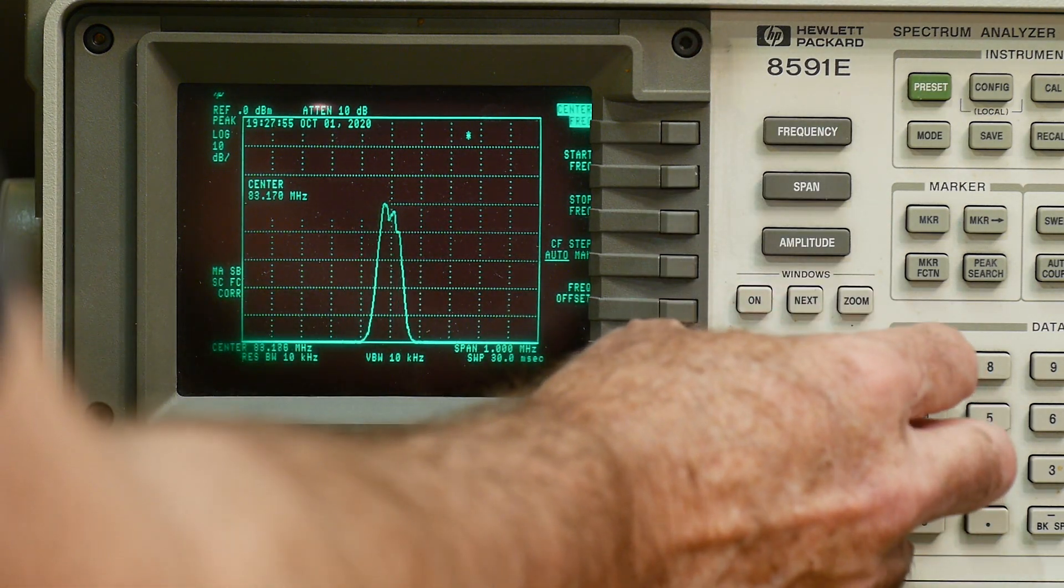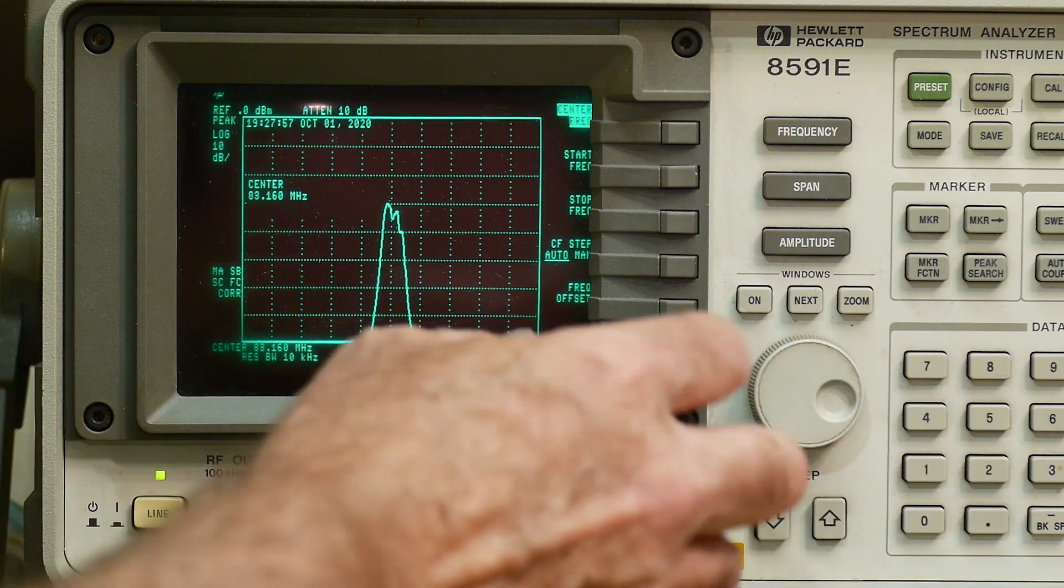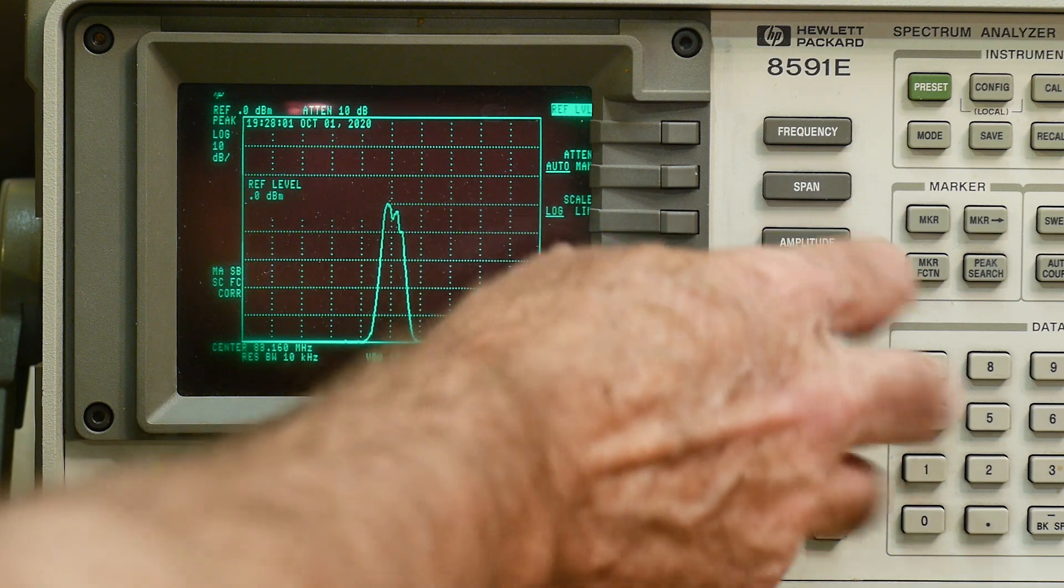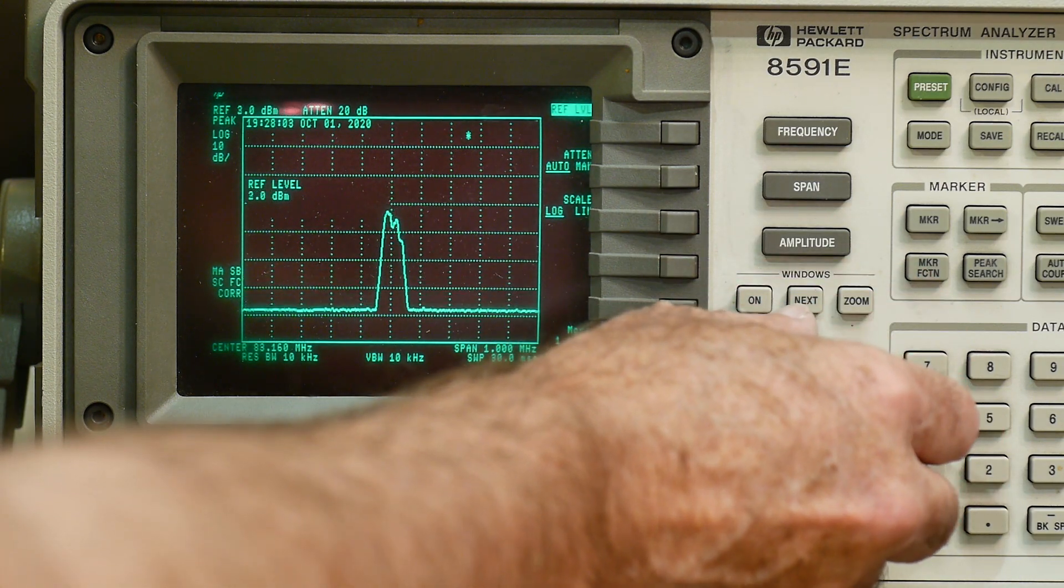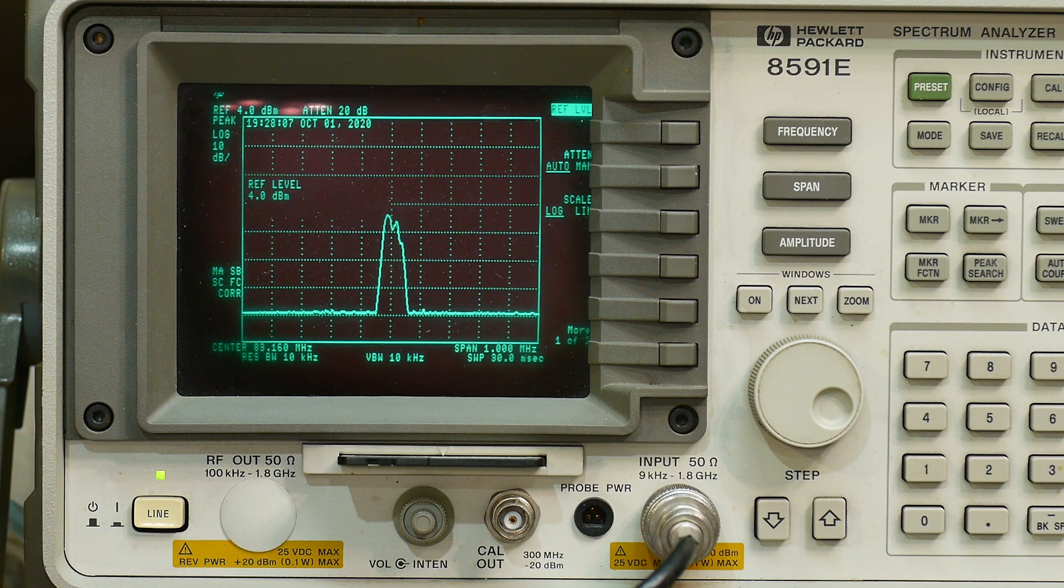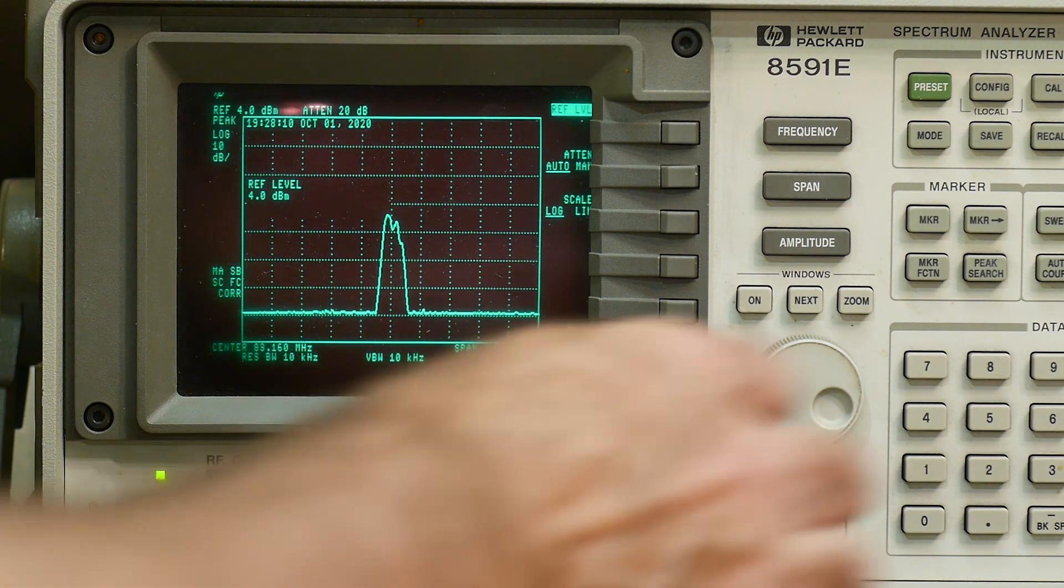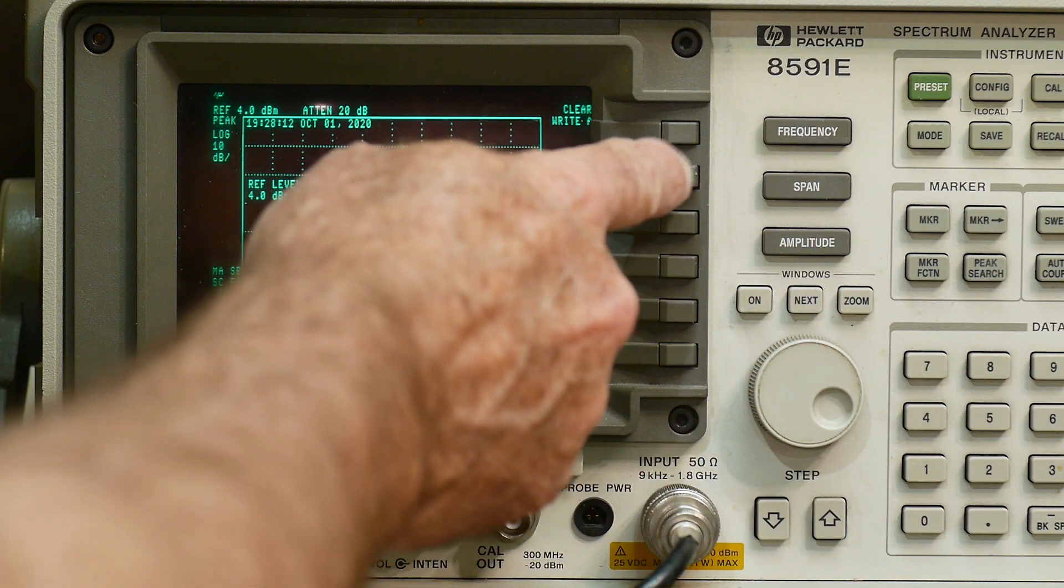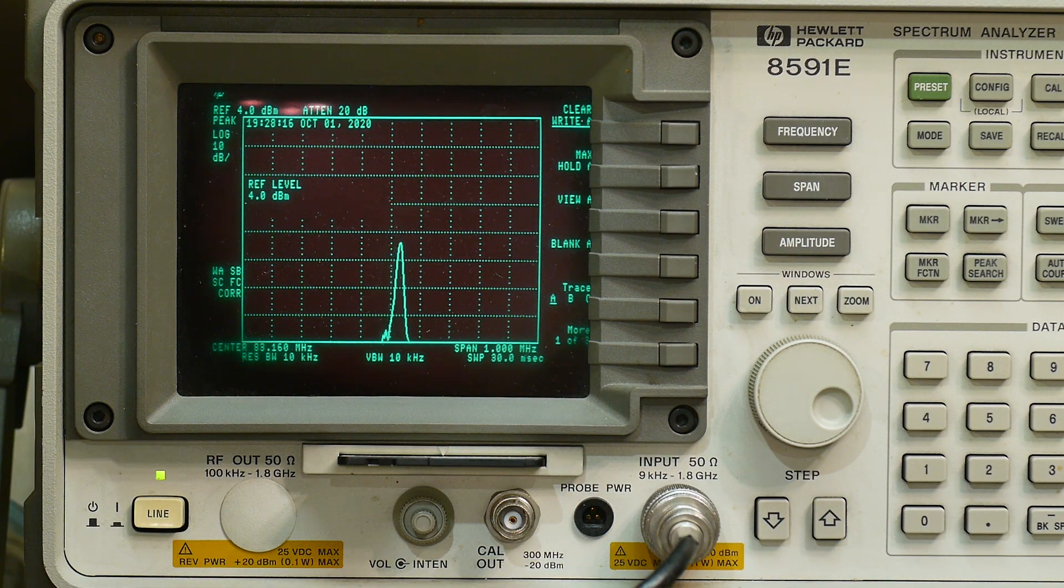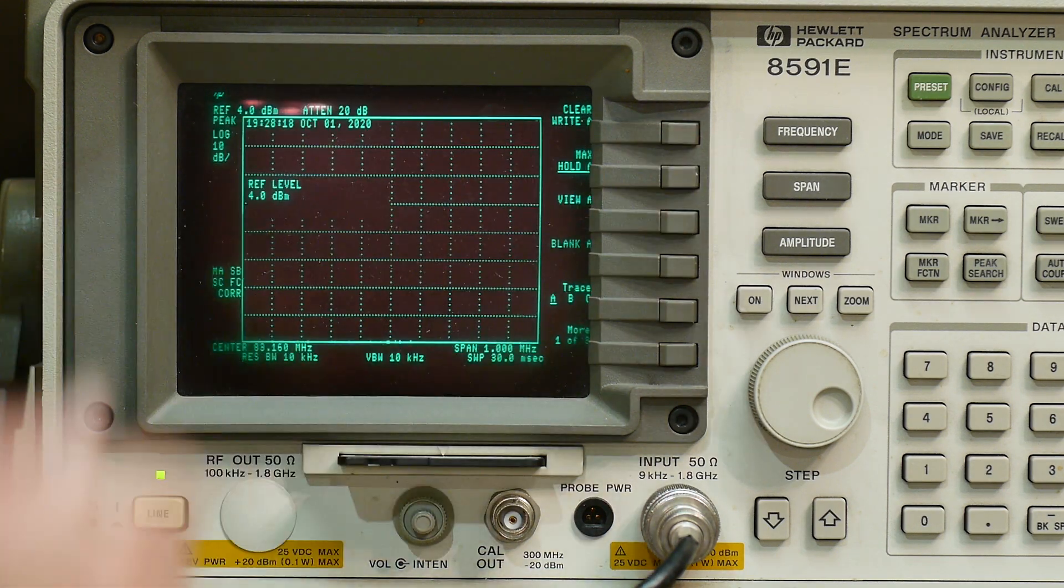So now it sweeps and it holds it. So there we go, that's the filter response. We can hit frequency and we can move it around and put it here. We can change the amplitude and look at the floor. There we go, looks pretty nice. We can go back to trace, we can say go back to normal mode and then do the whole thing.